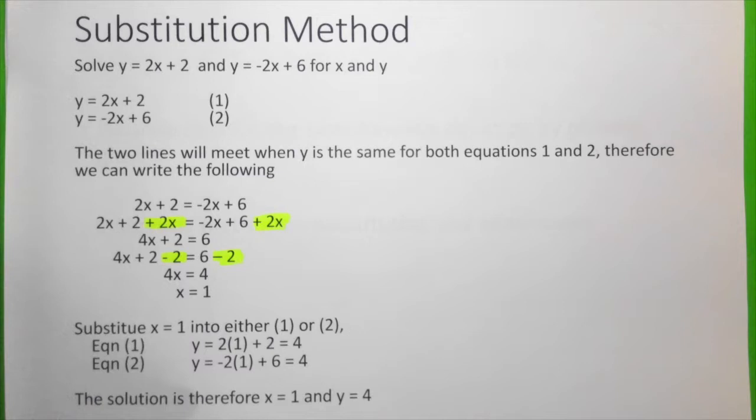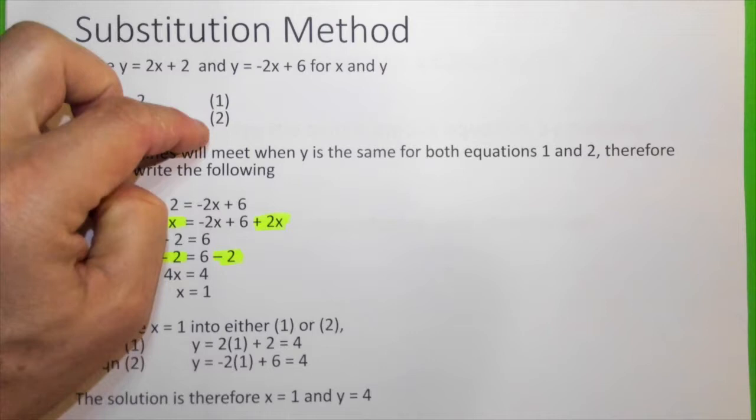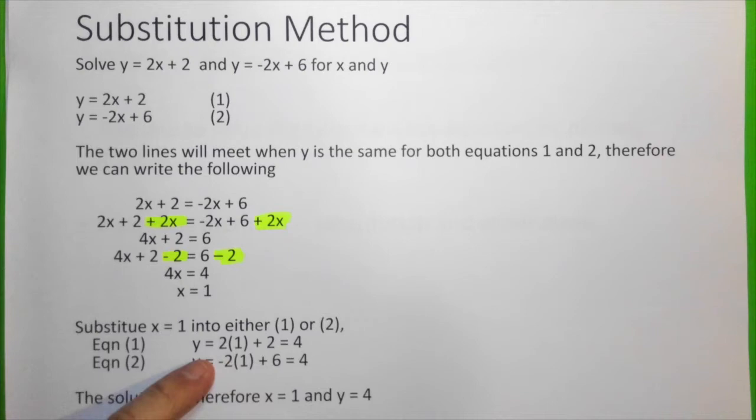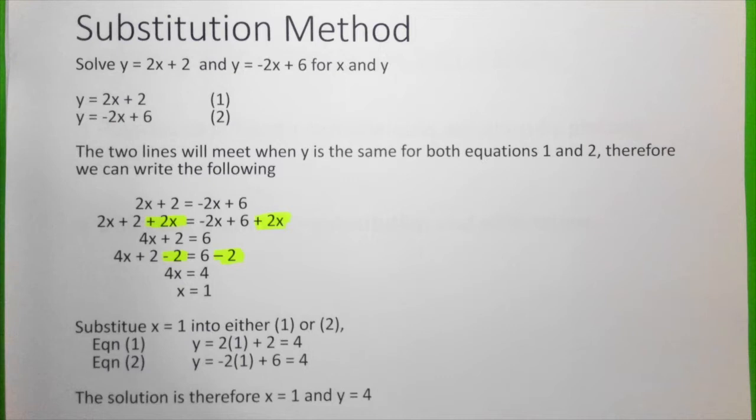Now, to find y, we substitute 1 into either equation 1 or equation 2. From equation 1, we know that y equals 2x plus 2, and when x equals 1, y equals 4. Similarly, from y equals minus 2x plus 6, when x equals 1, y equals 4. Therefore, the solution is x equals 1 and y equals 4.